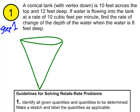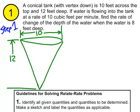The cone is 10 feet across and 12 feet deep. These units are all given in feet, so I'm just going to write 10 and understand all my numbers here are given in feet. Water is flowing into the tank at a rate of 10 cubic feet per minute, so we've got water flowing into the tank.